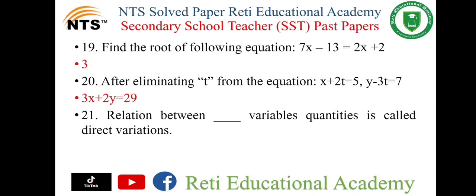Question number 21: The relation between 2 variable quantities is called direct variation. The correct answer is 2 variables.